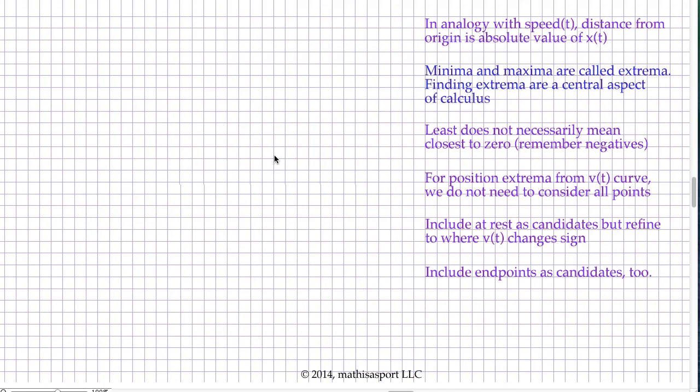We clarified with that example of Mount Everest and the Mariana Trench that least, or the minimum, does not necessarily mean closest to zero, that we've got to remember negative values. And then finally,